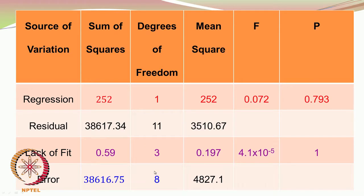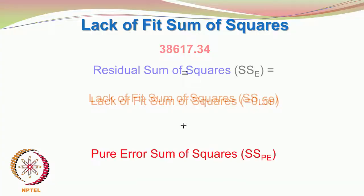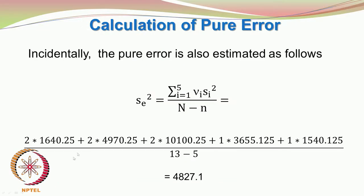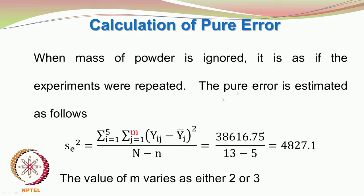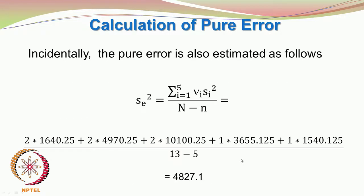The error degrees of freedom was 8. Going back: it is 13 minus 5, computed as 2+2+2+1+1 = 8. We also had the formula N minus n: 13 minus 5, where 13 is the total number of runs and 5 is the number of independent settings, giving 8.